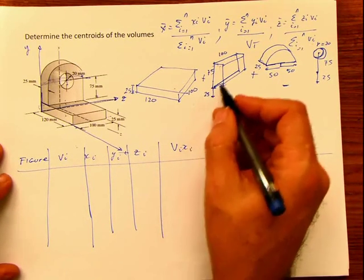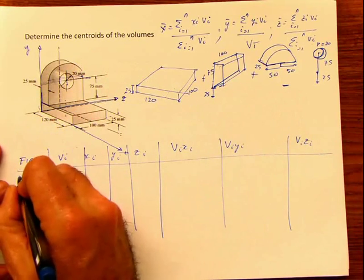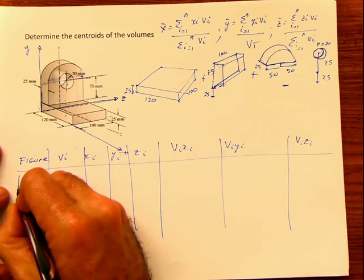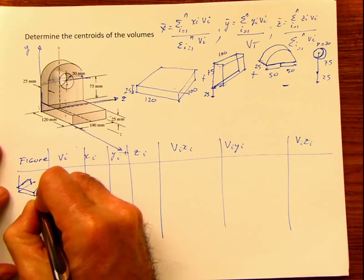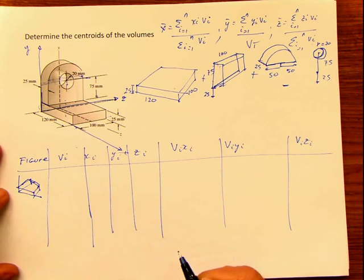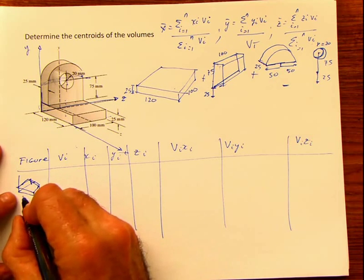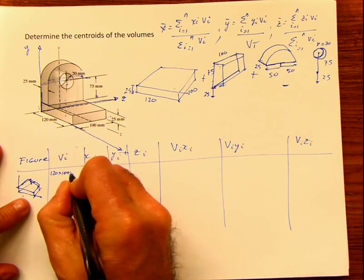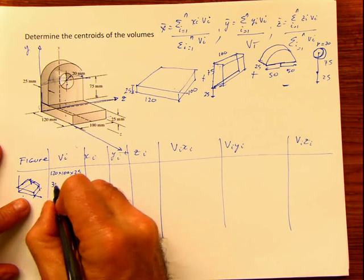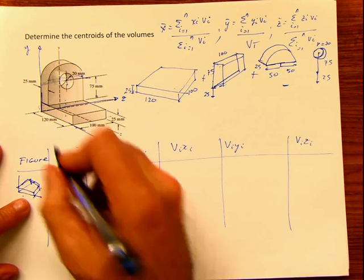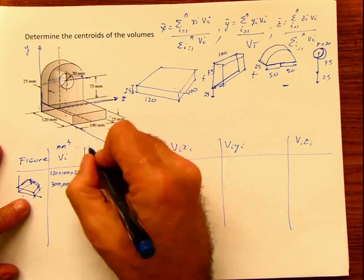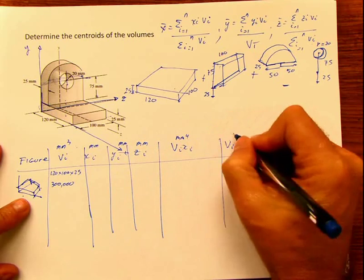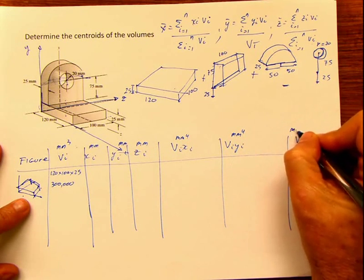First figure — according to my axis, this shape has dimensions 120 × 100 × 25, so the volume is 120 × 100 × 25 = 300,000 mm³. Remember the units: mm³ for volume, mm for coordinates, and mm⁴ for the products.